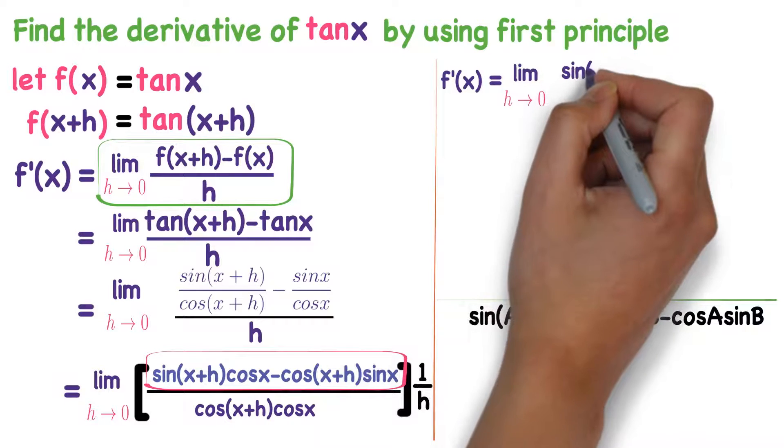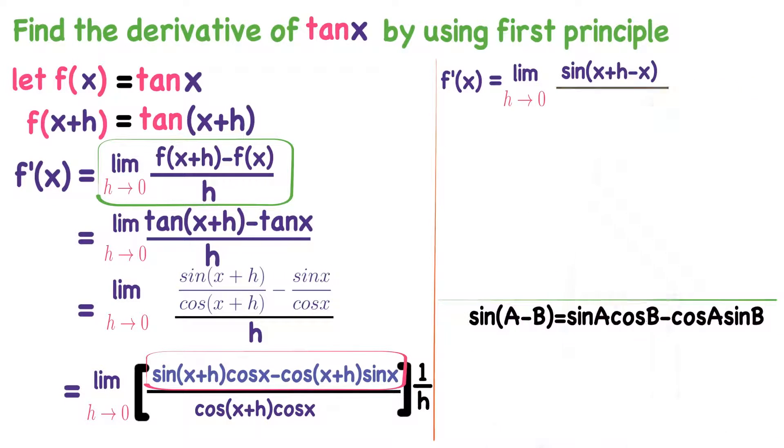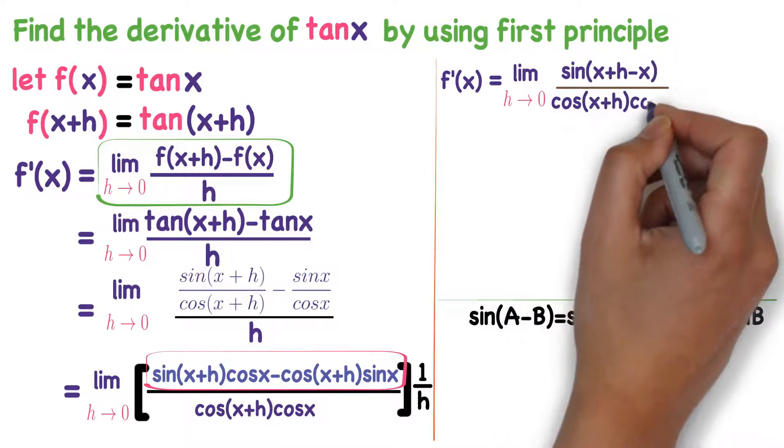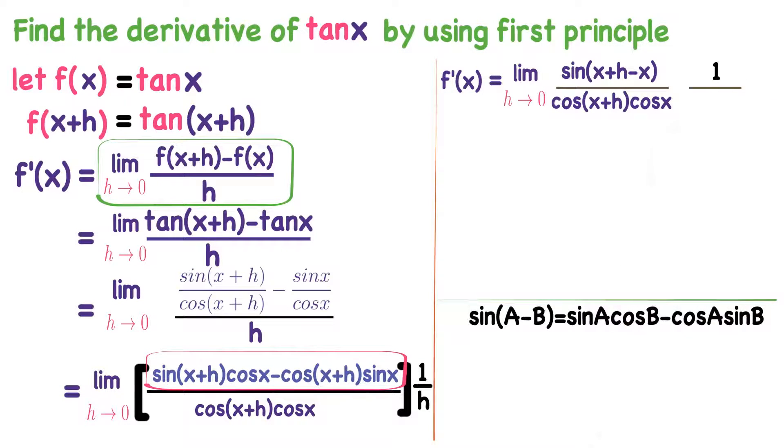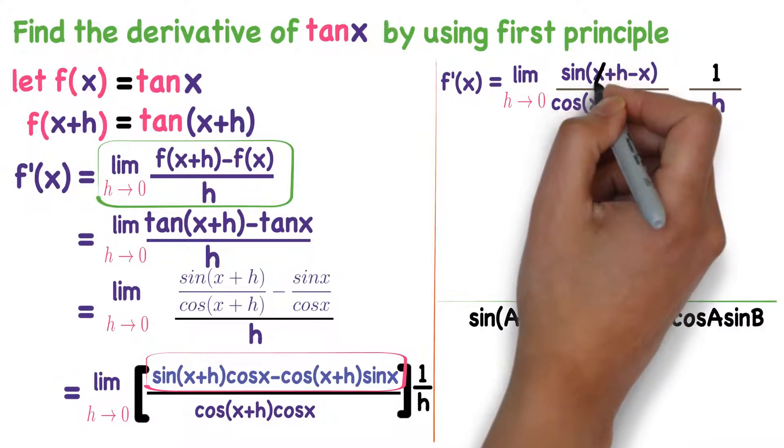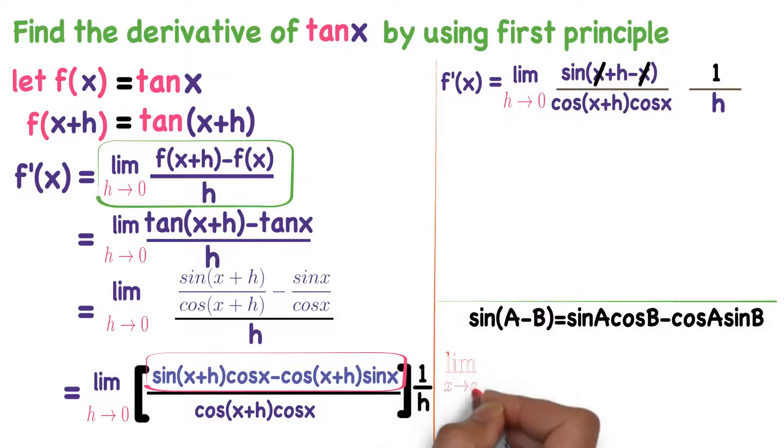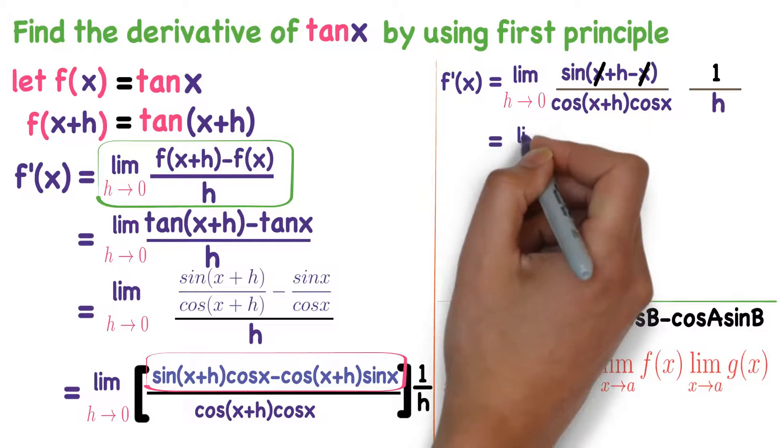So what is f'(x)? Limit h tends to 0, sin of A minus B. A is x+h minus x divided by cos(x+h) into cos x into 1 divided by h. Now this x will get cancelled. We know the formula that limit x tends to a, f(x) into g(x) equals limit x tends to a f(x) into limit x tends to a g(x). Apply the same formula here.